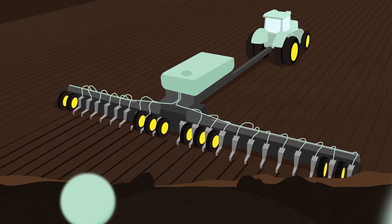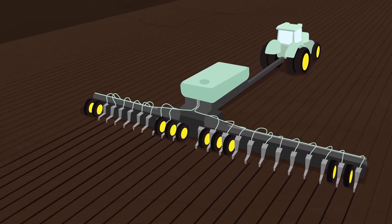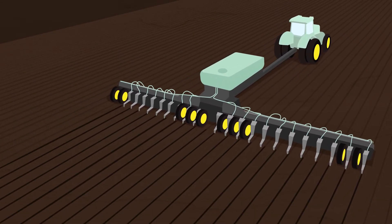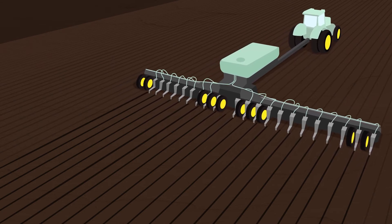ESN is the perfect nitrogen source for one-pass direct seed operations, helping eliminate additional application and equipment costs.